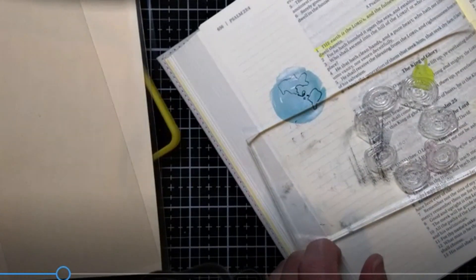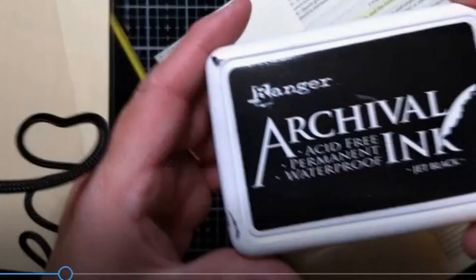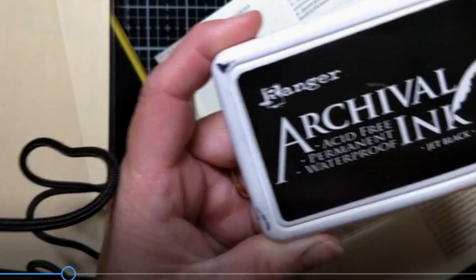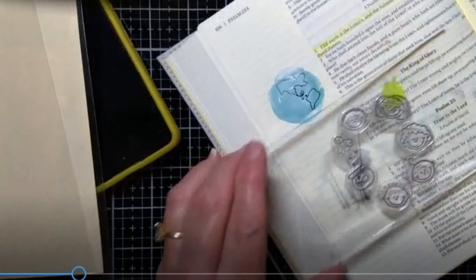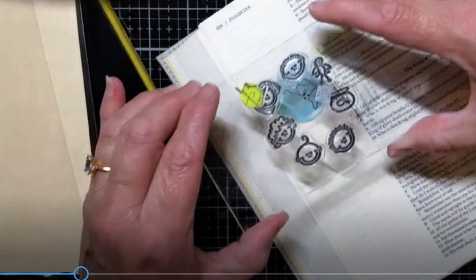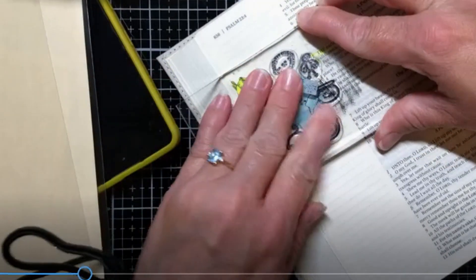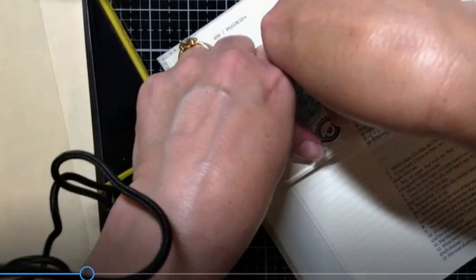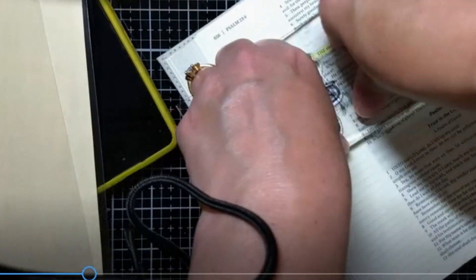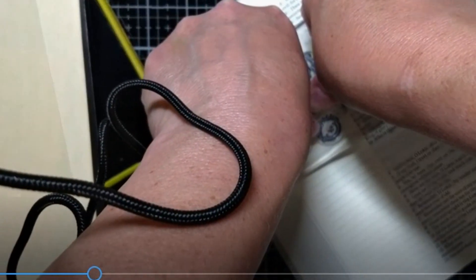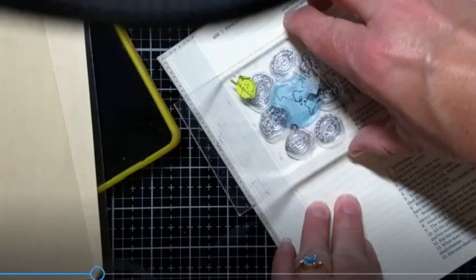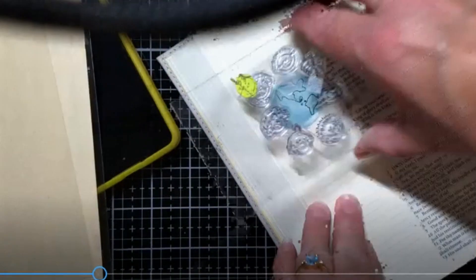Then I'm going to use some Ranger archival ink so that I can stamp this. It's acid-free, permanent and waterproof, and jet black. I'm just going to press this fairly hard because I want to make sure that the image goes through. Very good, very good.